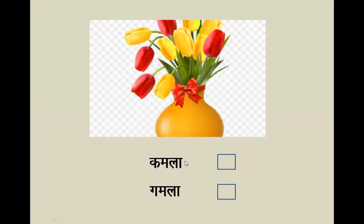The ā symbol is a straight line placed beside the letter. Recall it very well. Thank you.